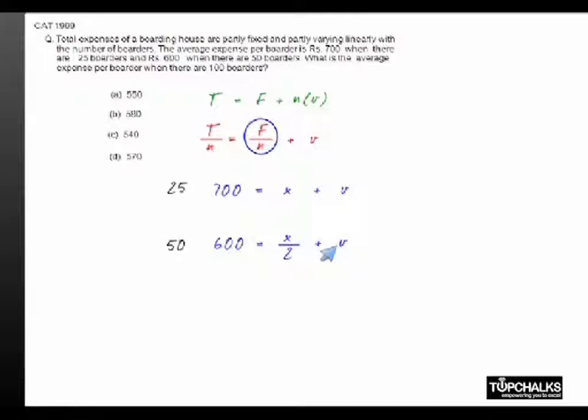So from this, the difference of 100 rupees that we see here is equal to the difference x by 2. So x minus x by 2 equals 100, from which we will get x equals 200.